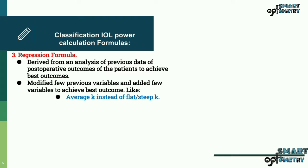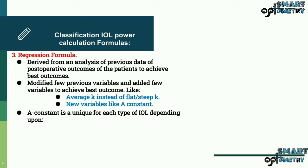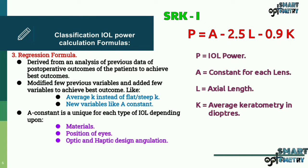Like they chose average K instead of flat or steep K, and added a new variable that is A constant. A constant is unique for each type of IOL depending upon materials, position of IOL, optic and haptic design angulation. An example for regression formula is SRK1. Here P equals IOL power, A is constant for each lens, L equals axial length, K equals average keratometry in diopter.